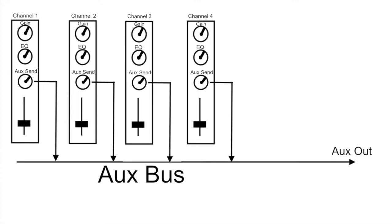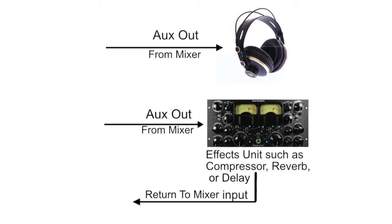Most mixers and most DAWs also have a send return option built in. It's like a mini mixer within the mixer — the aux send will send the signal to an aux bus, which can have several sends going into it and can receive several independent channels of audio, blending them all together. On a mixer, that aux channel will have its own dedicated output and input that can be used as a send return. If you plug in an effects unit such as a reverb unit, you can control how much from each channel gets sent to that reverb unit, and then the output of the reverb goes into the send return input and gets blended with the entire mix — so you can control how much reverb is blended in from each independent channel.